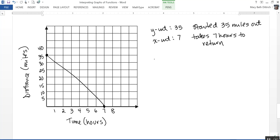The slope of this line, let's go ahead and calculate that. There's my y-intercept. There's my y-intercept. There's my x-intercept. 35 over a negative 7, or a negative 5. So my slope is negative 5.